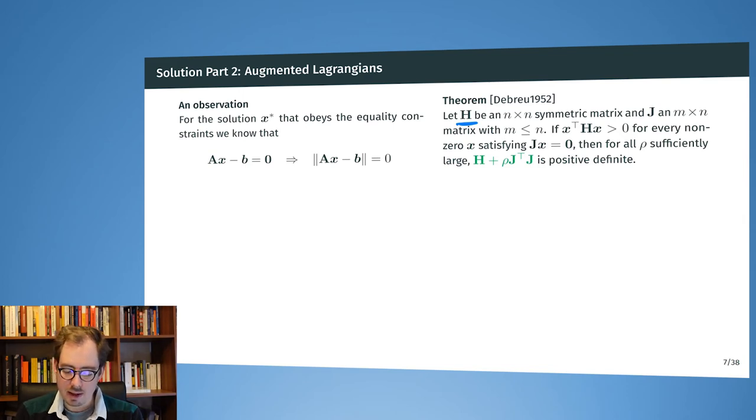So we want to be in a situation where we can invert the Hessian of the Lagrangian. So here we have our initial matrix H that is not necessarily invertible. And we want to modify it in a way that it becomes invertible. And there's this theorem by Debreu that if we have a second matrix J that fulfills that whenever Jx equals zero, then the original matrix with x transposed Hx is greater than zero. And if that is the case, then we can select some rho sufficiently large such that H plus rho J transpose J is positive definite.